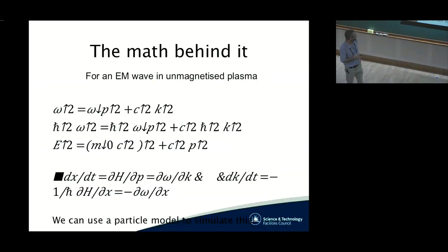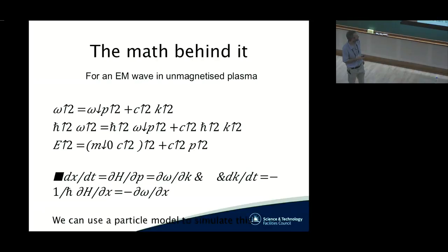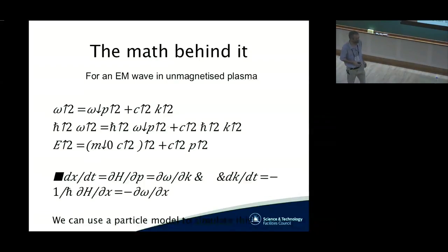We have the Hamiltonian equations: dx/dt equals dH/dk, which we identify with d-omega/dk. For an electron that would be the speed; for a photon it's the group speed. And we can calculate dp/dt, giving dk/dt equals minus d-omega/dx. The Hamiltonian approach used for an electron can be used for a photon just as easily.